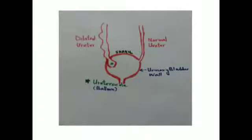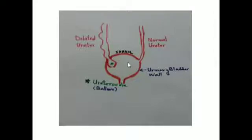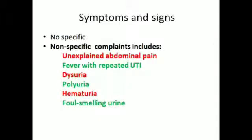In this diagram, we see the urinary bladder and its outlet. This is the normal ureter joining the urinary bladder. This is a dilated ureter which comes down, joins the urinary bladder, and makes a balloon-like structure or mass inside the lumen of the urinary bladder. This is called urethrocele.